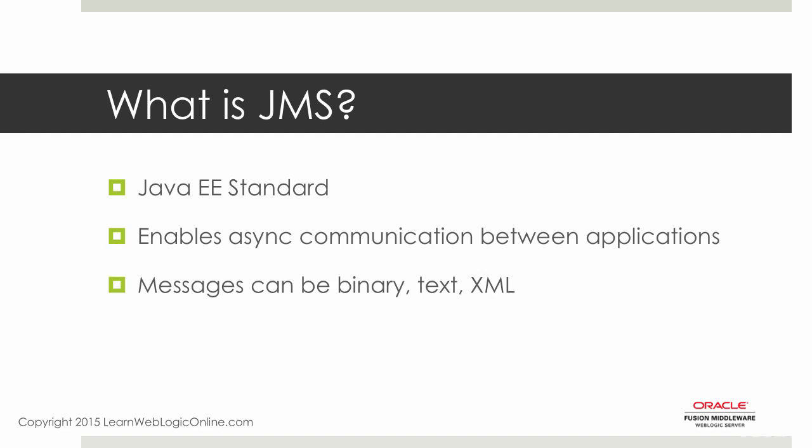So, what is JMS? JMS is defined by a Java EE standard, and it is an asynchronous communication method that allows applications or services to talk to one another asynchronously. In JMS, you have producers, consumers, and destinations. A producer produces a message, and that message gets sent to a destination. Consumers then consume messages from those destinations.